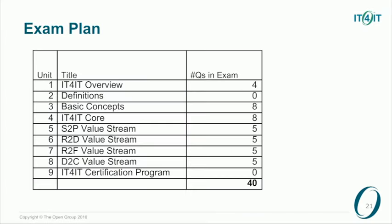Here's a look at the exam plan — how we break down the number of questions by topic. As we develop a program, we analyze and decide where to focus the questions, building a plan to ensure every exam form is consistent and equivalent. The live exam has two banks of 40 questions. When you go to take the exam, it's random whether you get bank A or bank B. If you fail and need to retake, it knows which form you took and will give you the other form next time. There are no specific questions on definitions and no specific questions on the IT4IT certification program itself — a lot of focus on basic concepts, IT4IT Core, and five questions on each of the four value streams.